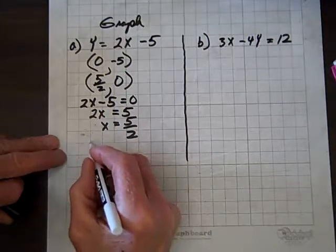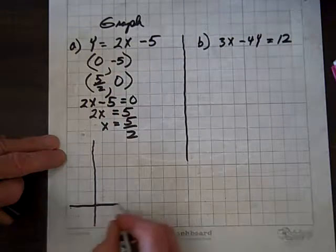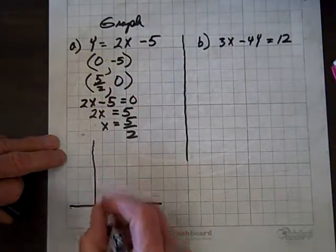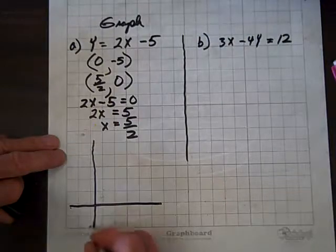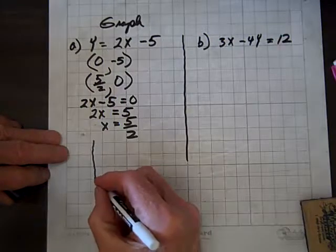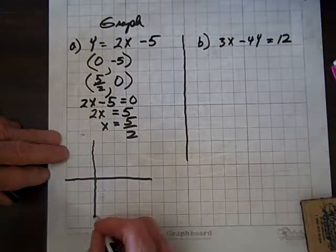Now let's graph that. We're at zero, negative 5. Let me make an adjustment here. Zero, negative 5.